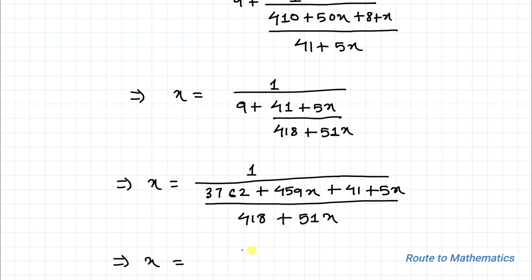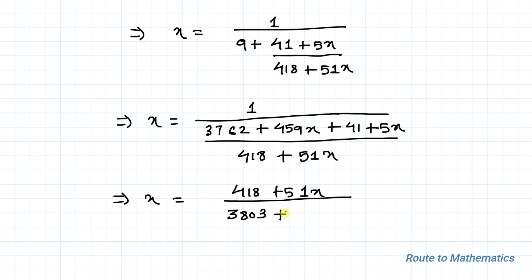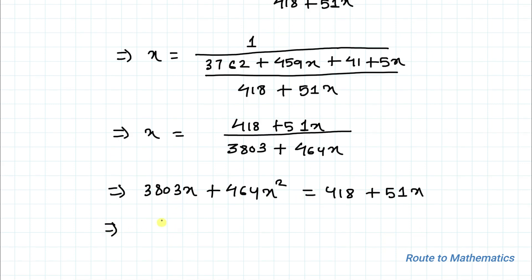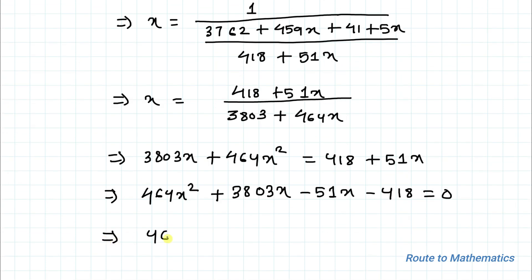Which implies x equals to 418 plus 51x divided by 3803 plus 464x. Now we will just do the cross multiplication. We have 3803x plus 464x square equals to 418 plus 51x. By taking all the terms to the right hand side, we have 464x square plus 3752x minus 418 equals to 0.